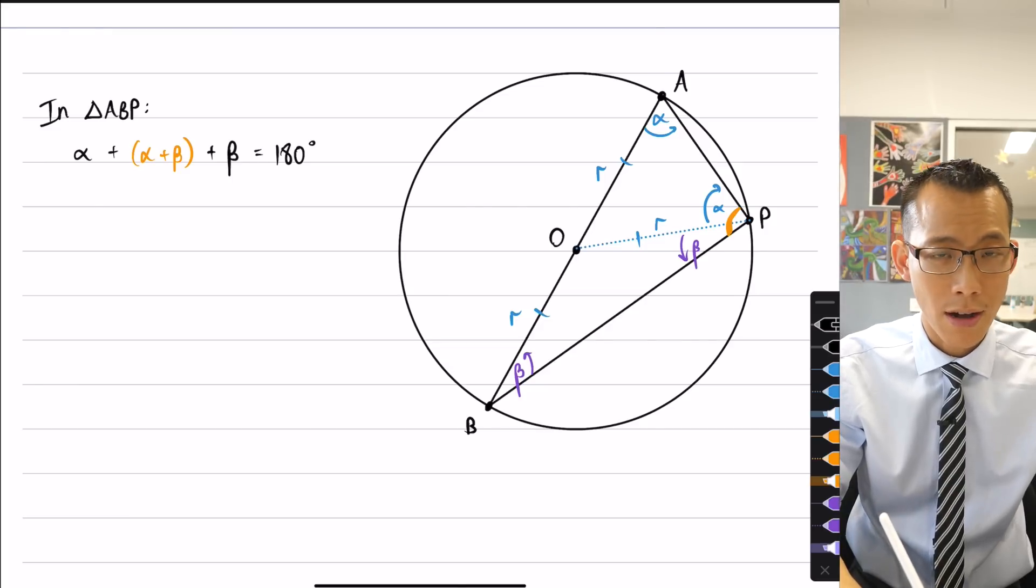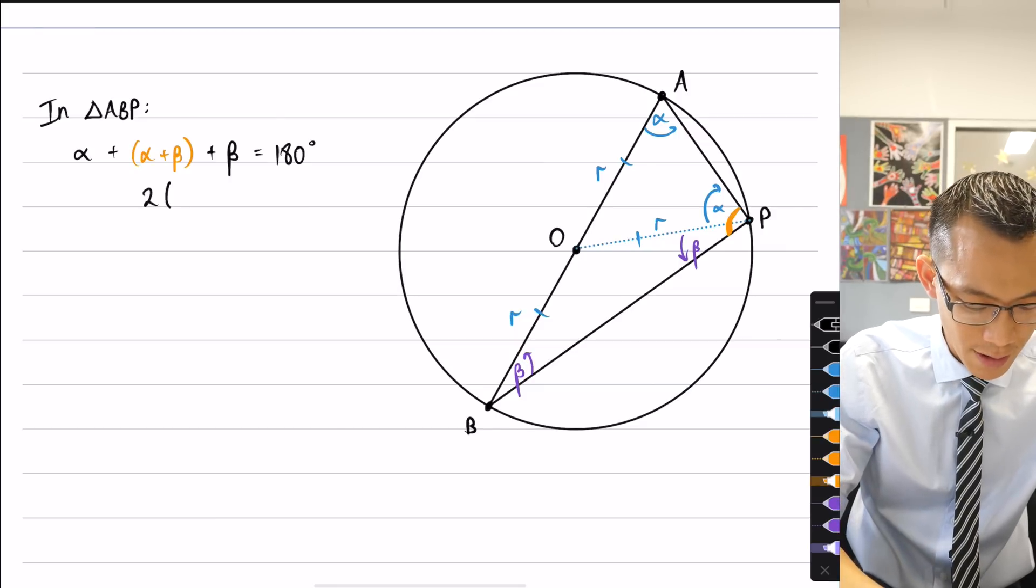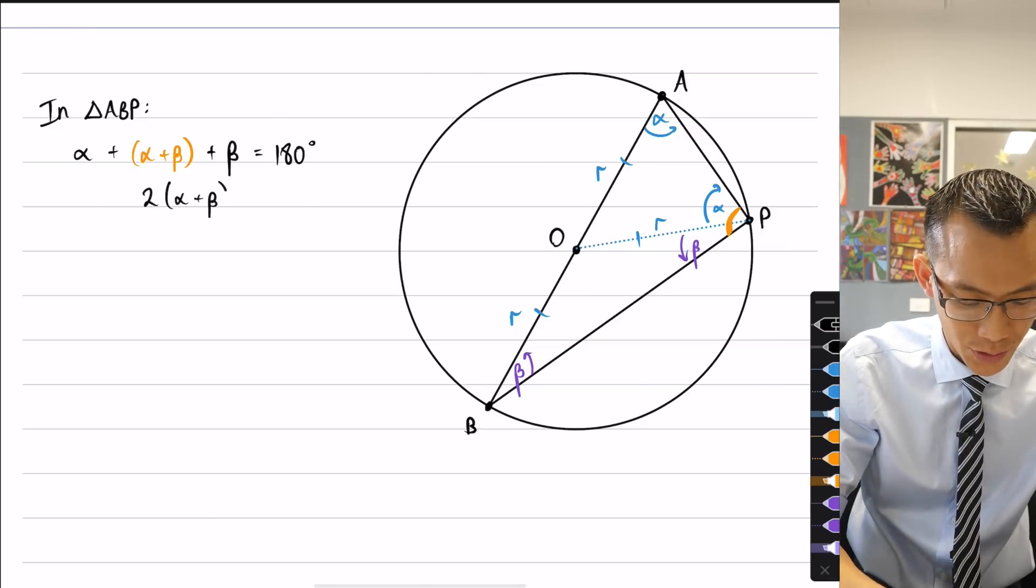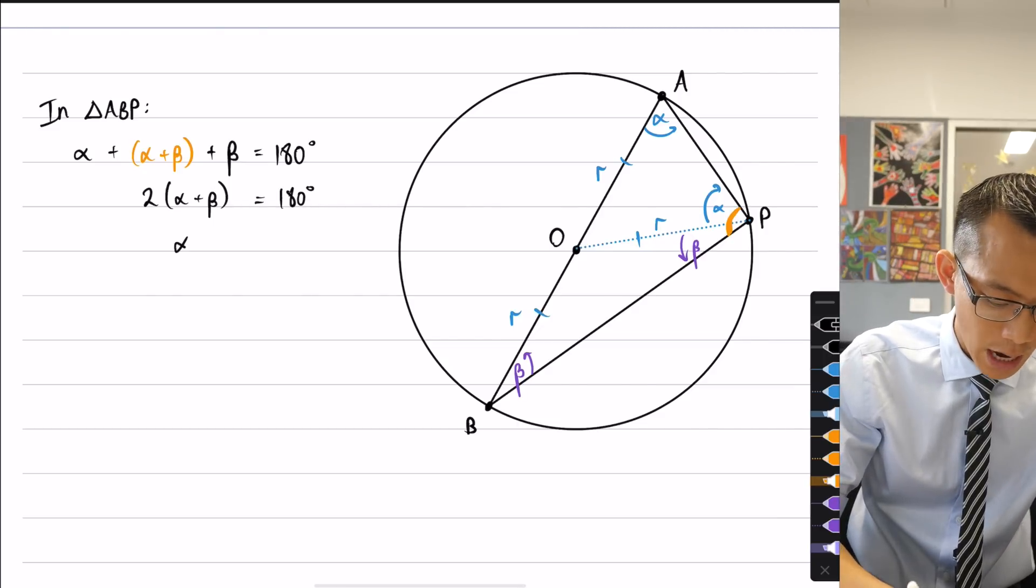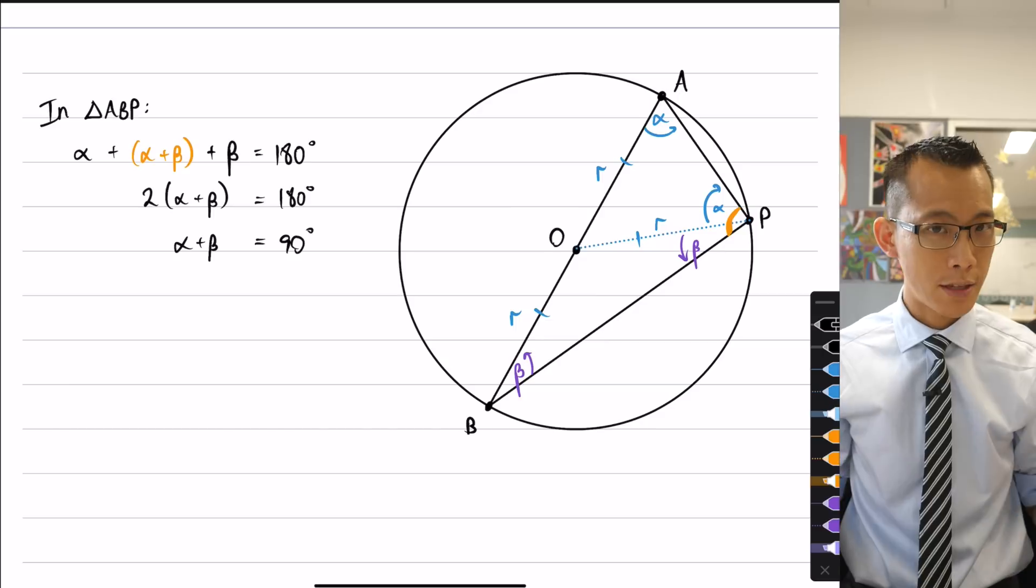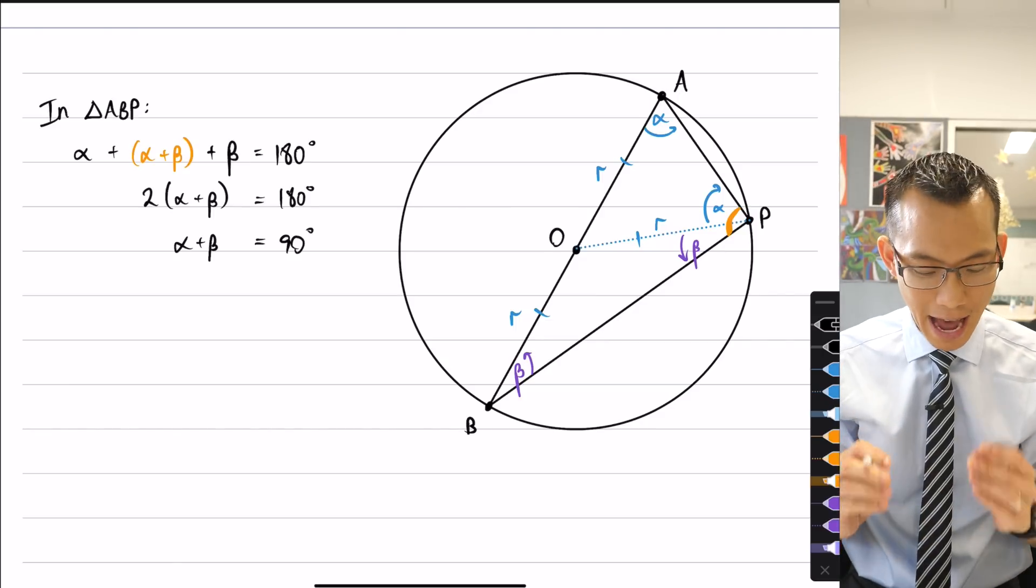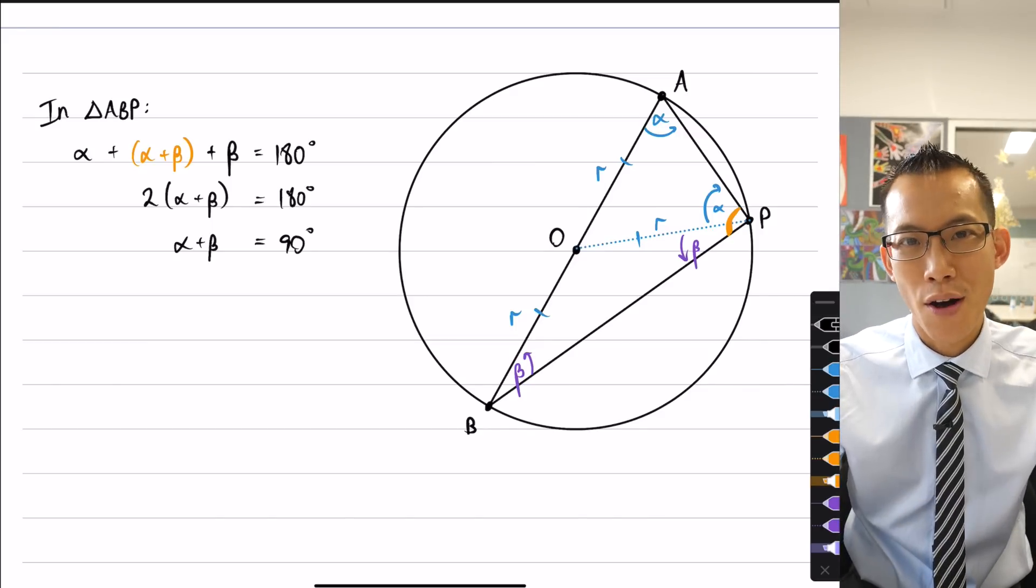That's going to all be equal to 180 degrees because that is what the angle sum of a triangle is. But just doing some very simple collecting of like terms on the left-hand side, you can see I've got double alpha plus beta because two alphas, two betas, that's equal to 180, and then just halving both sides gives me the result that I was after. Alpha plus beta, no matter where P happens to be on the circumference, is always going to be that right angle of 90 degrees.